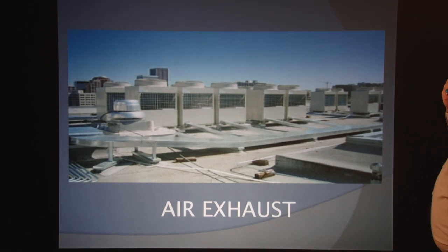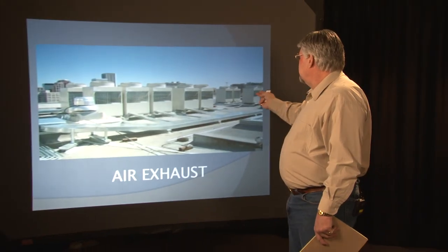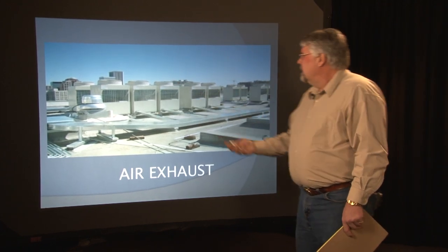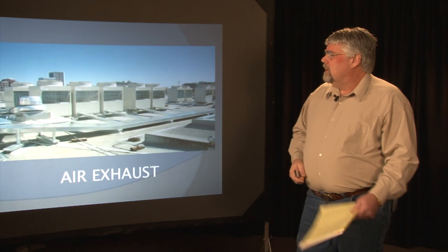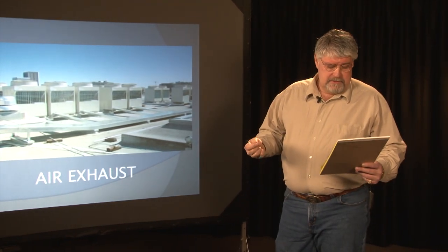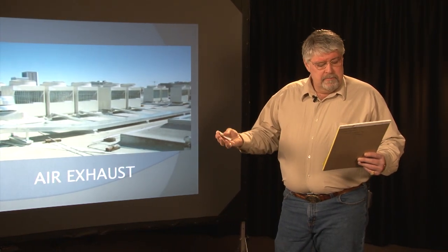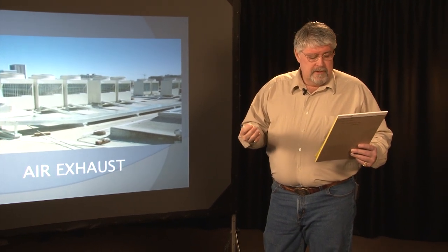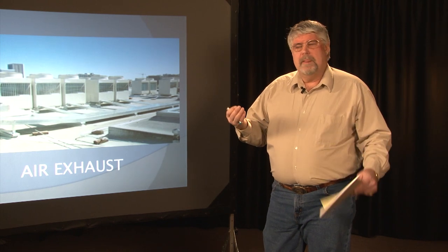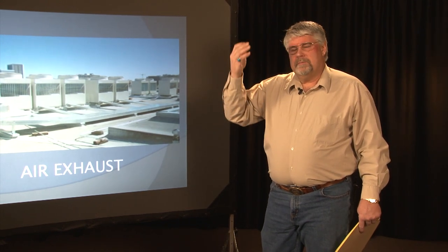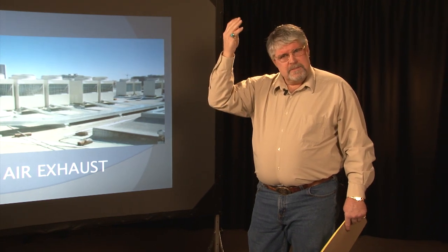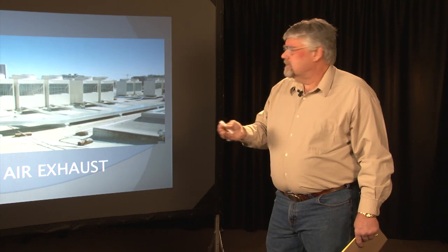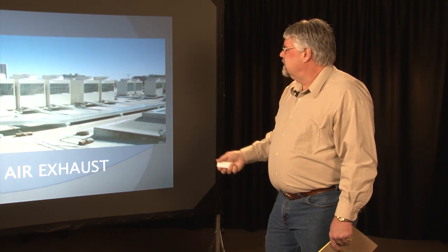Air exhaust. Air exhaust units — we'll see several of these mounted on top of a commercial building. This is to push air out of the building. Air exhaust is air being removed from any space or appliance or a piece of equipment, forced directly outside by ducts or openings. Once the air comes out of an appliance or any piece of equipment, it has to be expelled because it may have combustion particles or bad air in it.